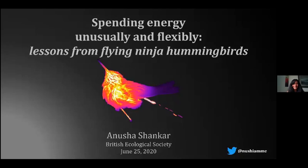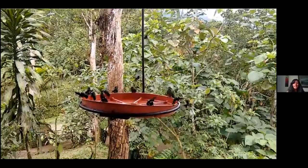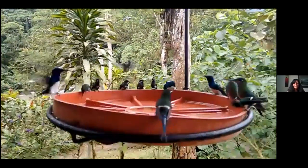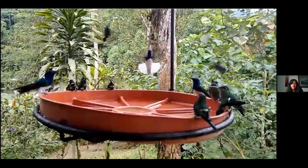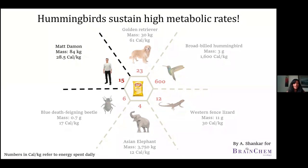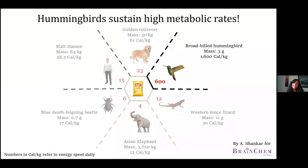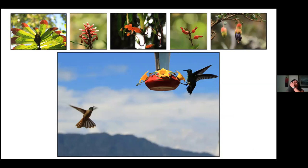Let me introduce you to our study subjects first: hummingbirds. They're incredible. They're extremely fast, they are tiny. They store very little energy and they use that energy very fast. So they're always living on this energetic razor's edge between life and death. To give you a sense of how quickly they use energy, here's a schematic which tells you how much energy a human would have to eat if they had the metabolic rate of different animals. An average Matt Damon, who's like 84 kilograms, would have to eat about 15 packets of Lay's chips a day to survive. If he had the metabolic rate of a hummingbird, he would need to eat 600 packets of Lay's chips a day. They get this energy from really high-energy nectar or sugar water from plants distributed in their habitats.